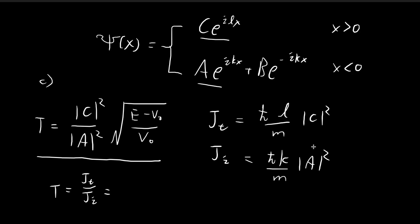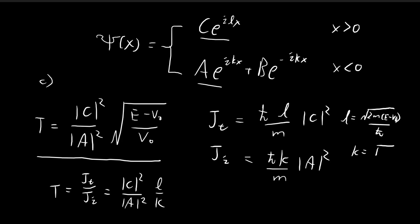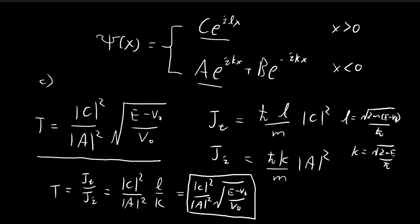Taking the ratio between the probability current terms, you see that we have |c|² divided by |a|² and then L over k — the rest of the constants cancel. Recall that L equals the square root of 2m(E minus V0) divided by ℏ, and k equals the square root of 2mE divided by ℏ. When taking the ratio L/k, the constants cancel, and all that remains inside is the square root of (E minus V0) divided by E. That is how you arrive at this formula — exactly the same as what Griffiths gives — justifying it via the ratio of probability currents.